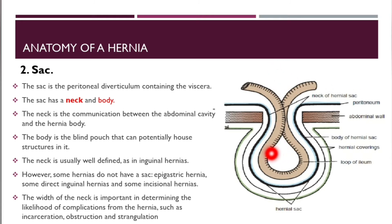The body is a blind pouch that can potentially house structures — for example, a loop of ileum. The neck is usually well defined, as in inguinal hernias. Some hernias do not have a sac, for example epigastric hernias, some direct inguinal hernias, and some incisional hernias.